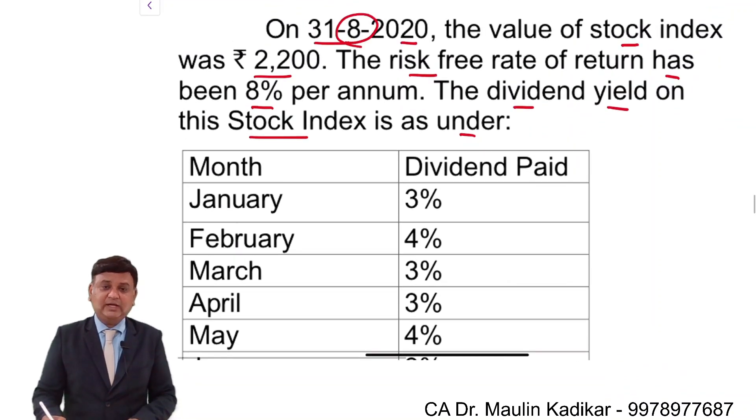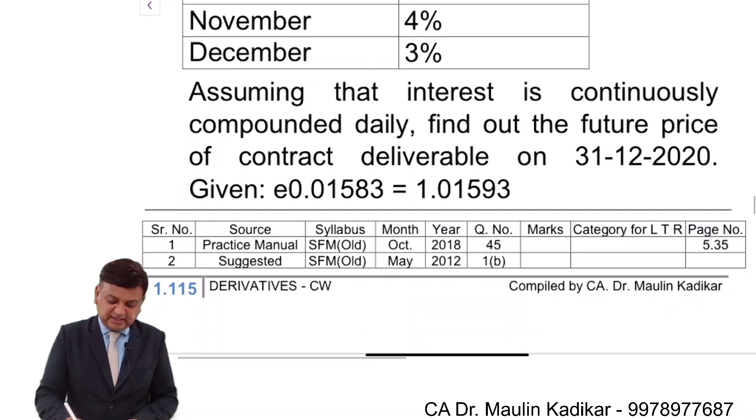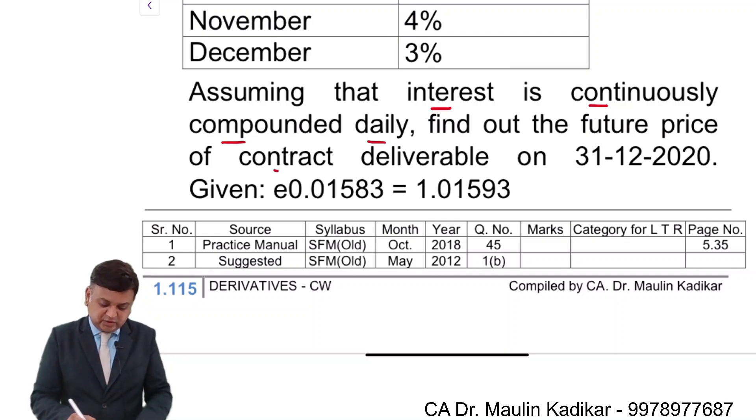The today's date is 31st of October. Assuming that the interest is continuously compounding daily, find out the futures price of the contract deliverable on 31st of December 2020, given the E factor provided to us.